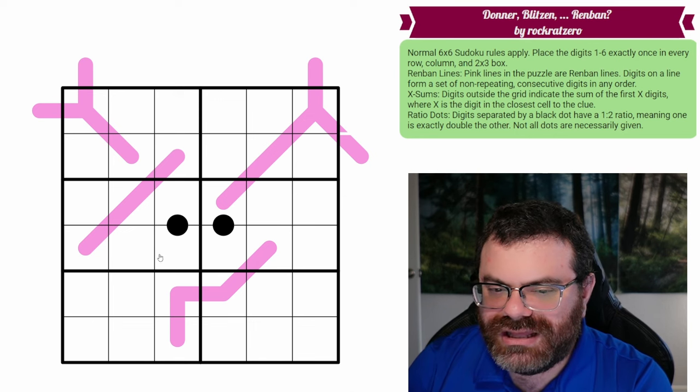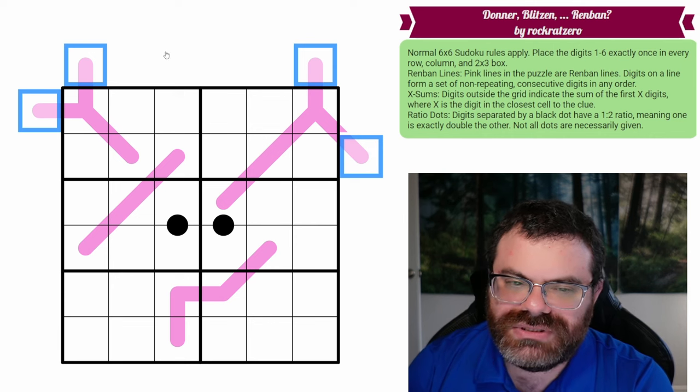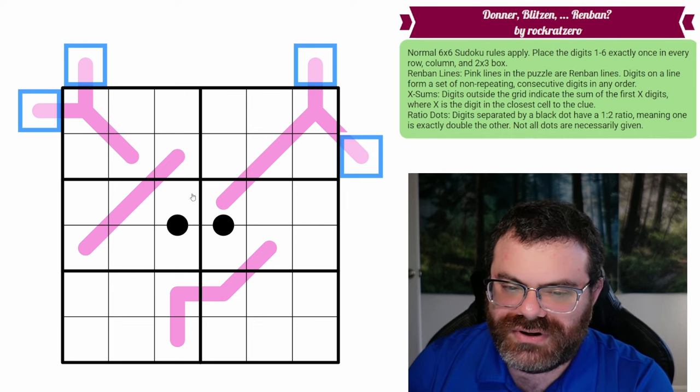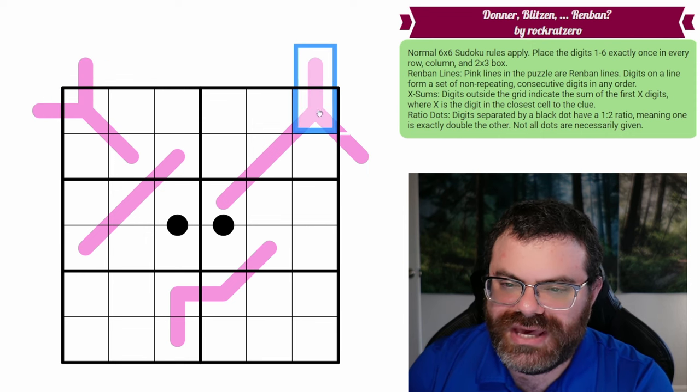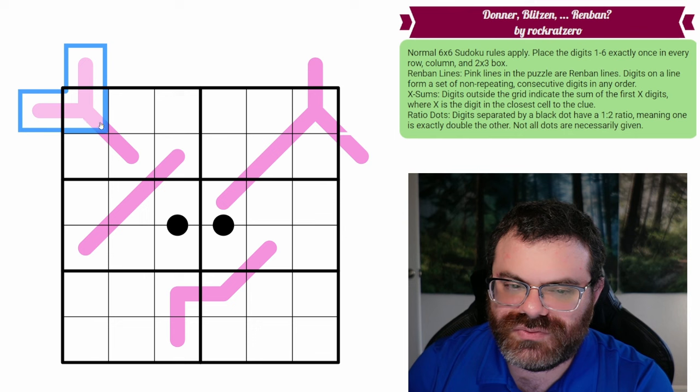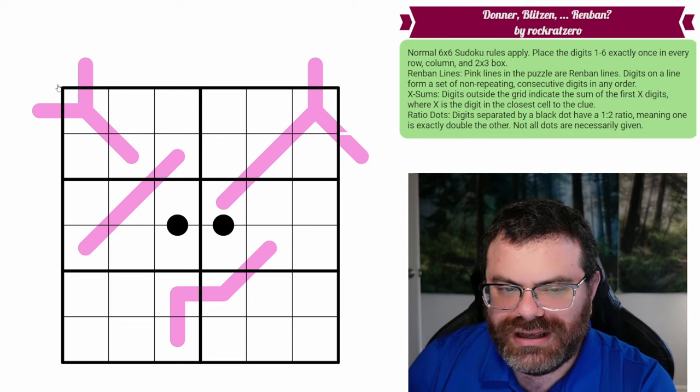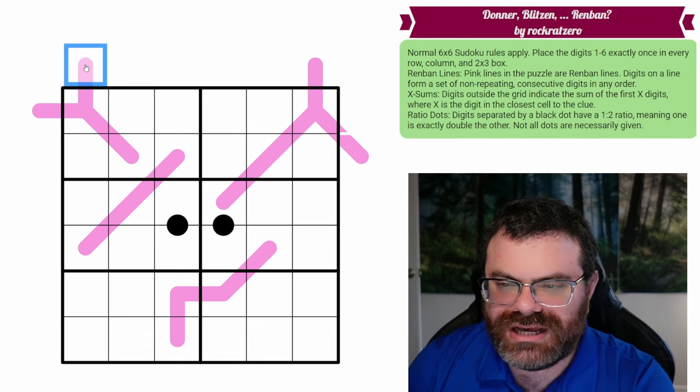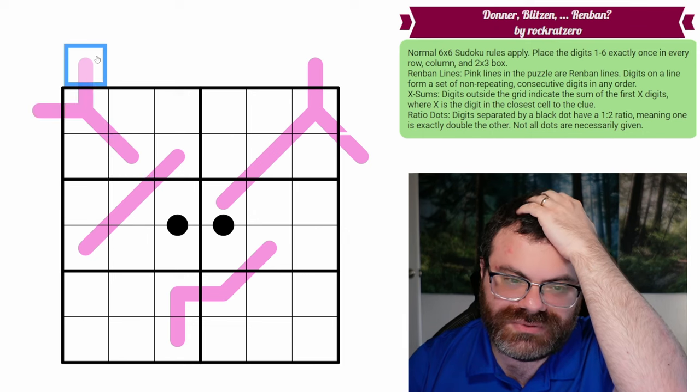Additionally, we have xSums. Notice that these Renbands go off the grid. Digits off the grid don't count as part of the Sudoku puzzle. Think of them as non-given xSum clues. So they can be any digit as long as they obey the Renband. This is one Renband, and this is one Renband. The branching you don't have to worry about.